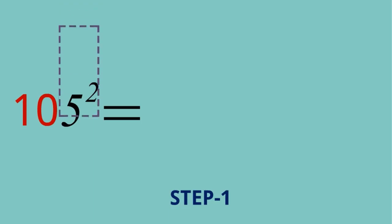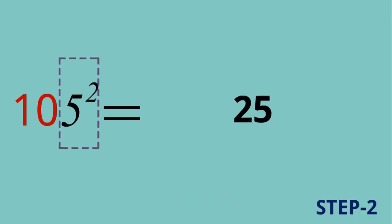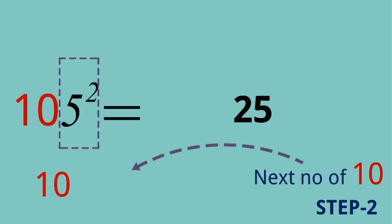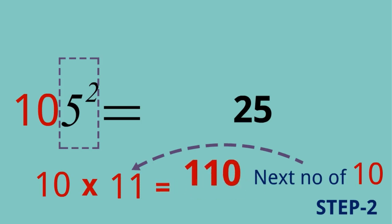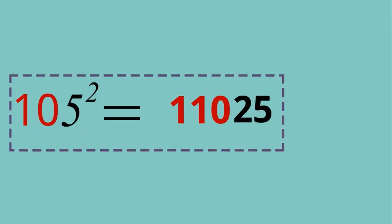105 squared. Step one: 5 squared means 25, here. Step two: 10 and the next number of 10 is 11. We multiply 10 and 11: 10 multiplied by 11 is equal to 110, and it will be moved here. So it becomes 11025. We can say 105 squared is equal to 11025.